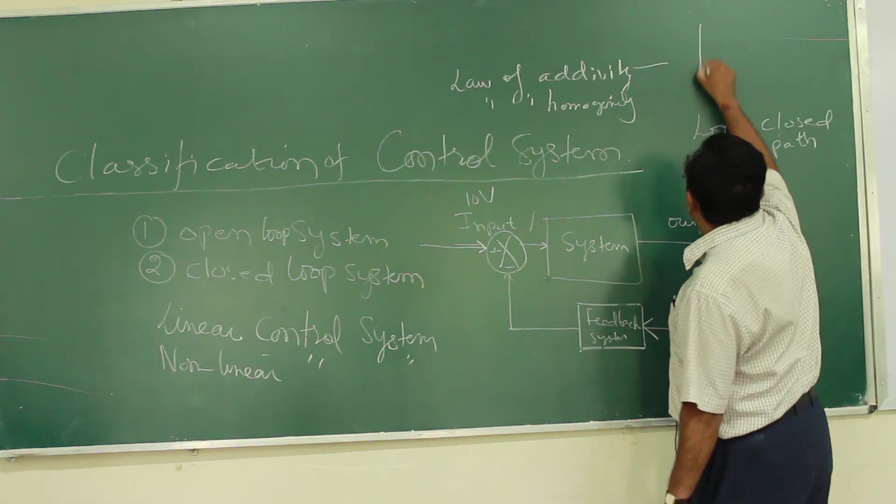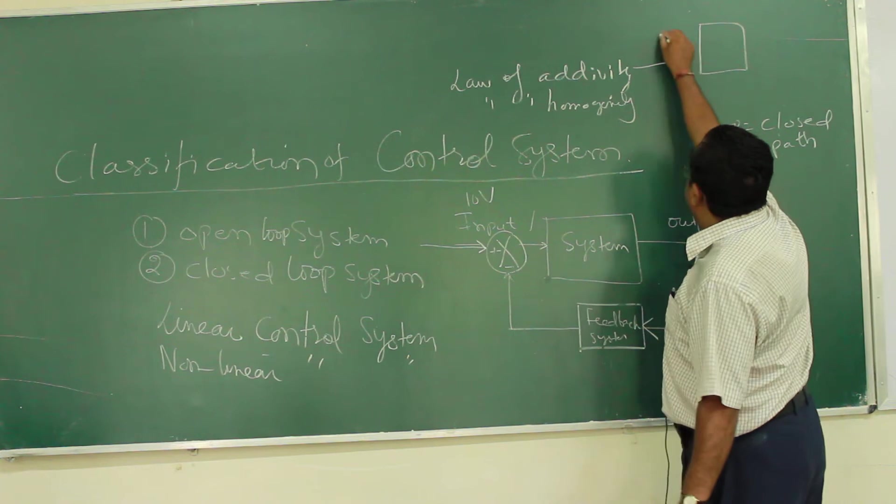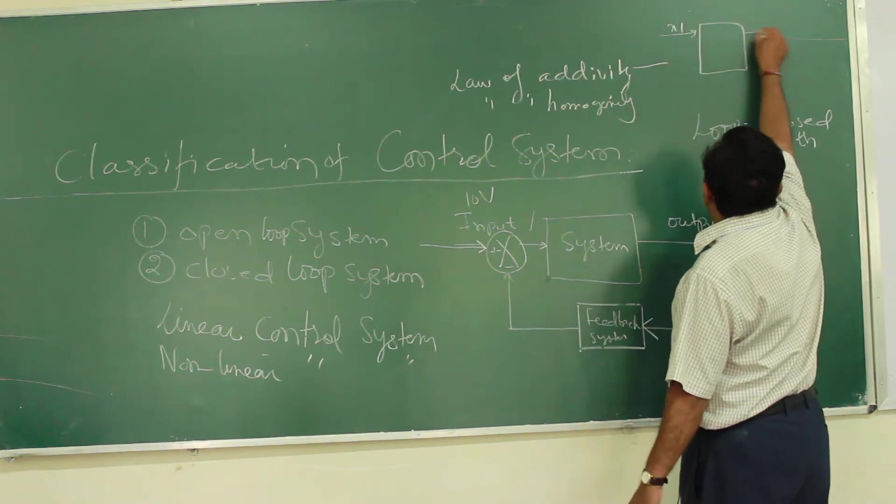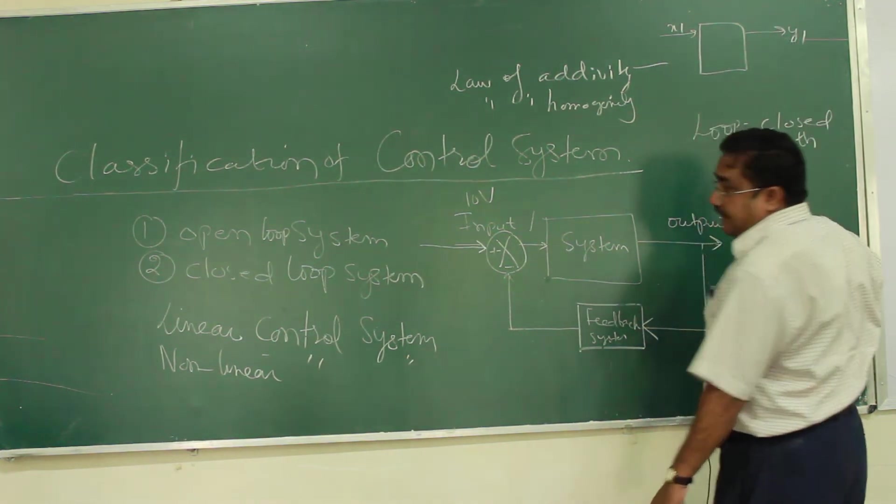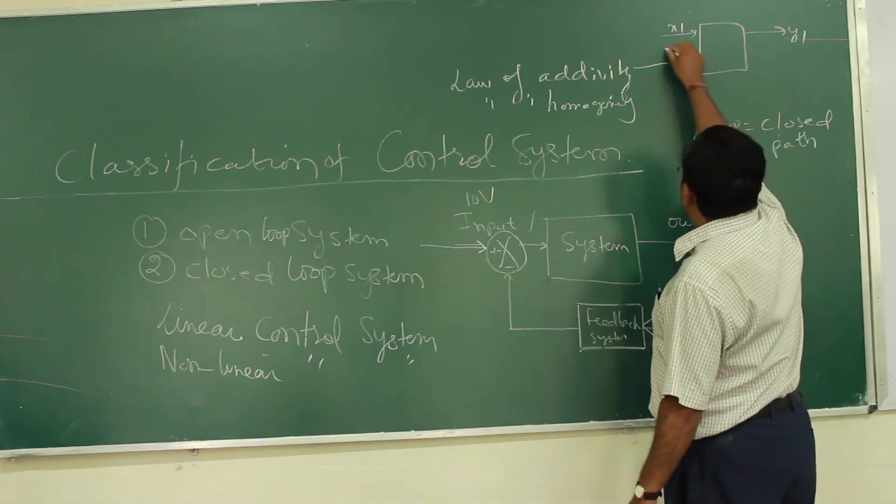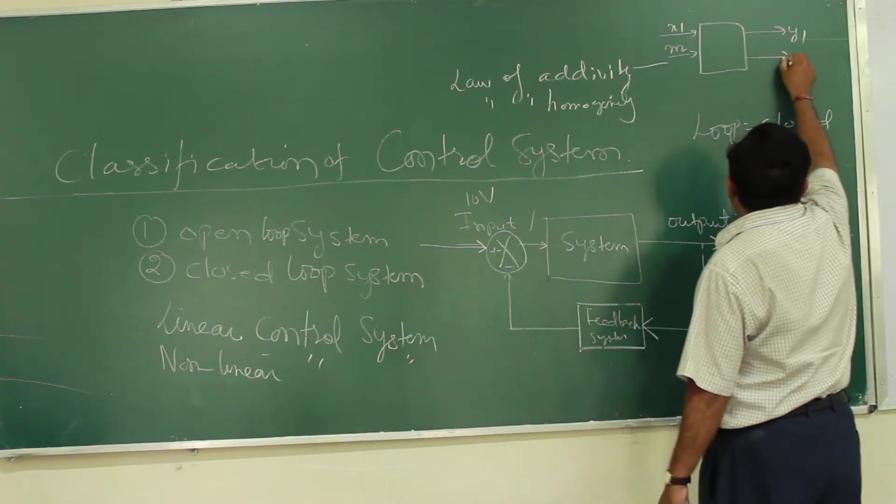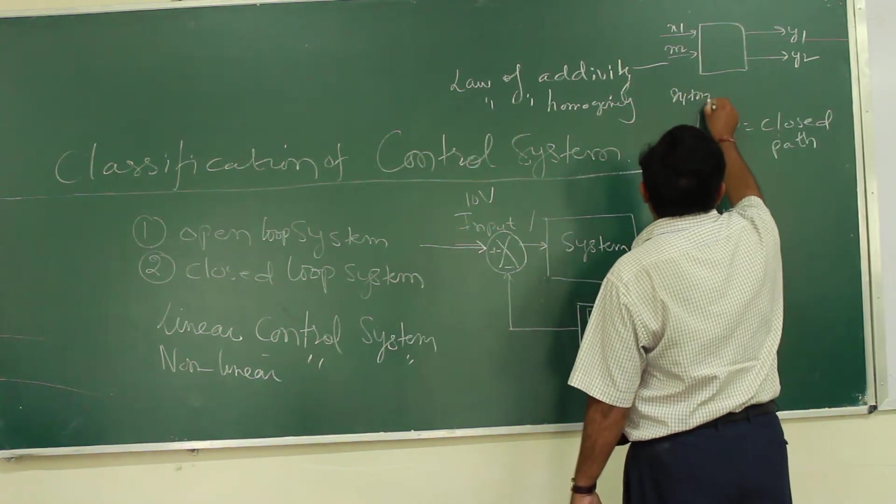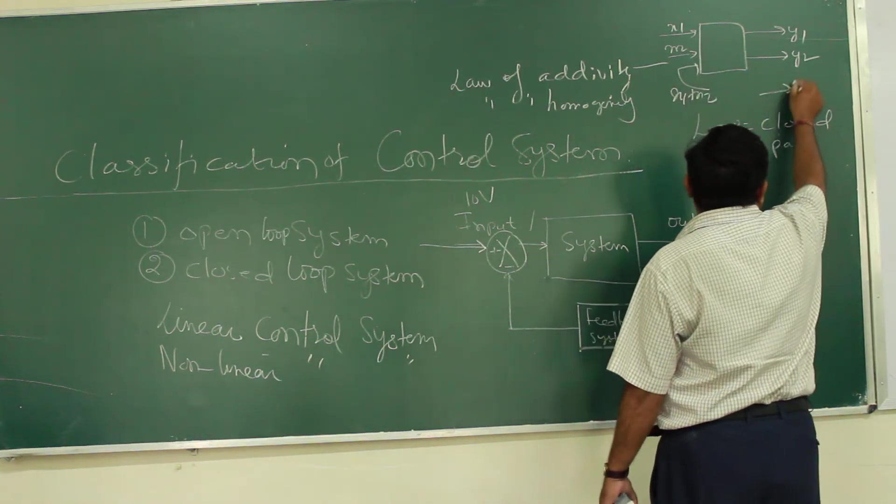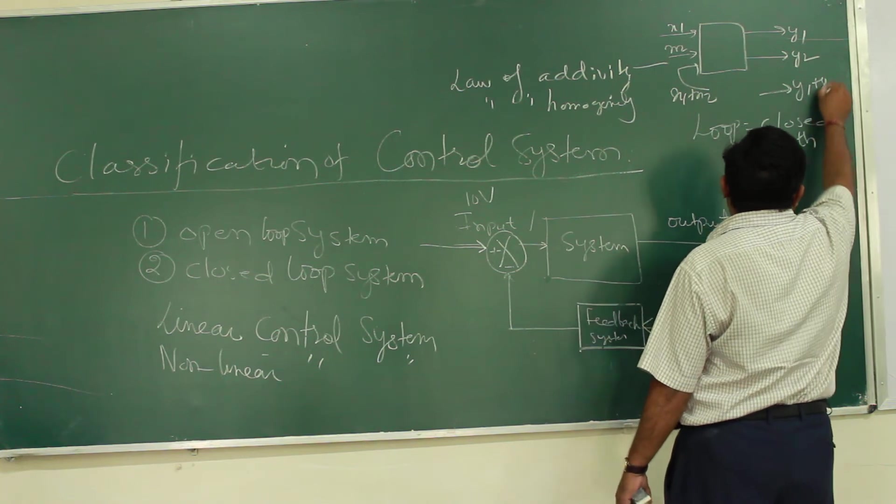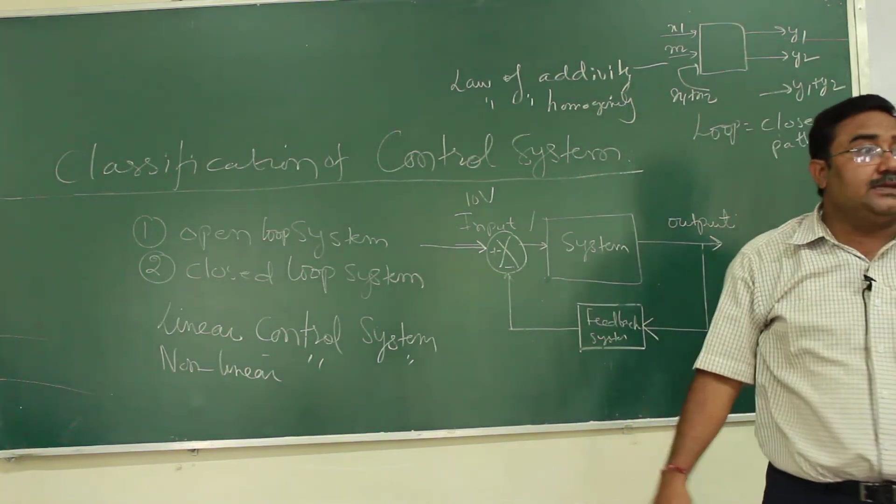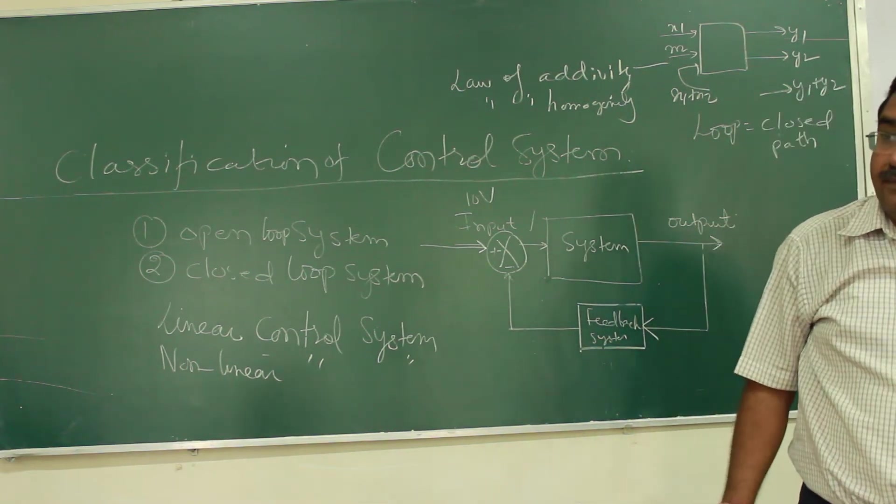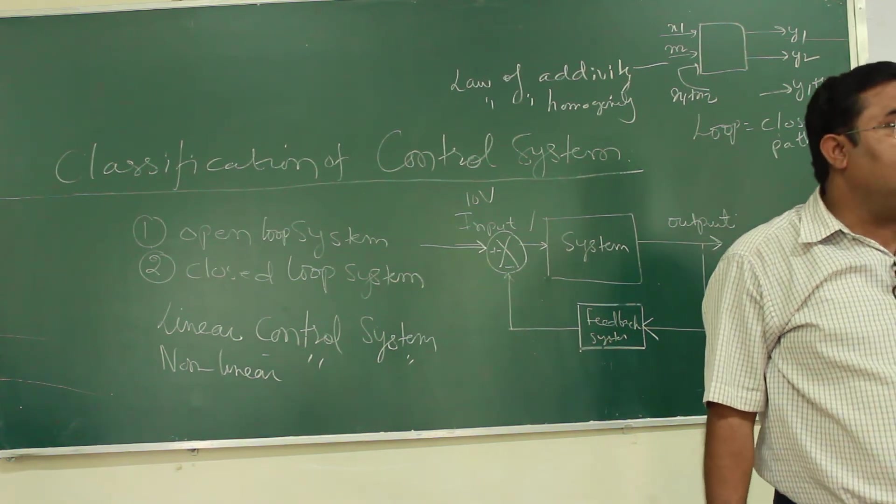What you have to do? You take a system, apply input x1, let its corresponding output be y1. Apply input x2, let its corresponding output be y2. Now, apply input equal to x1 plus x2. If you get an output equal to y1 plus y2, we say it is obeying the principle of additivity.